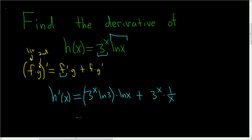And that's pretty much it, there's not much we can do here. Maybe we can write it as ln 3, 3 to the x ln x, plus 3 to the x divided by x. And that's it.